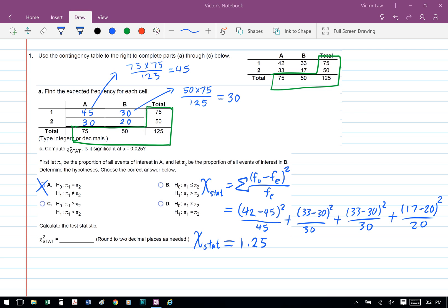Next, we can plug the numbers into the formula. So we have 42 minus 45 square divided by 45 plus 33 minus 30 square divided by 30 and so on. And if we calculate that, we're going to get chi-square equals to 1.25.